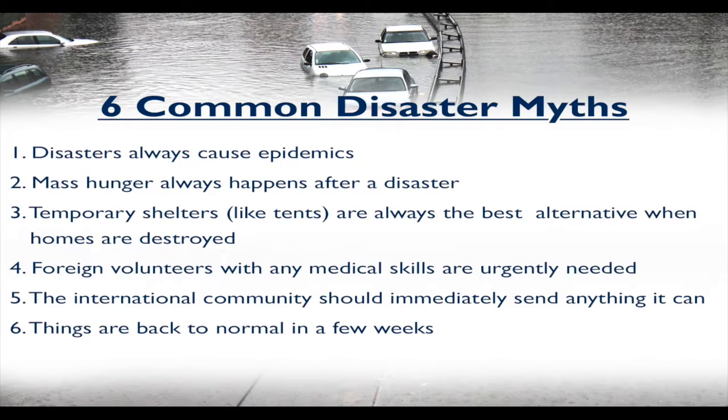The fifth most common disaster myth is that the international community should immediately send anything it can — a big mistake. We have to think about the social and cultural aspects of what disaster victims need. People in temperate climates may send winter coats, or Western societies may send clothing inappropriate for other cultures. Different foods or technologies may not be appropriate either. We must ask people first what they need. It's not good enough to do good — we must do good well.